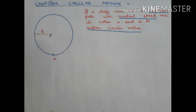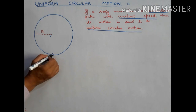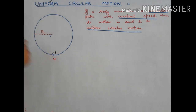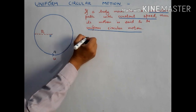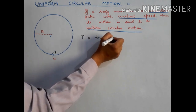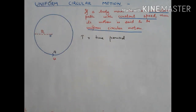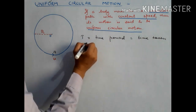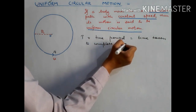What is uniform in uniform circular motion? It is the speed which is uniform — that is the definition. If V is the speed of the body moving in uniform circular motion and R is the radius, the body starts from point A. After completing one round it comes back to that point. The time spent for completing one revolution is called the time period, written as capital T. Time period is the time taken to complete one complete revolution.